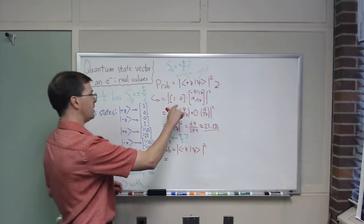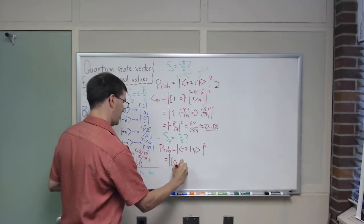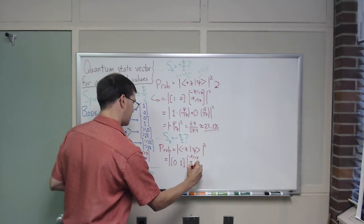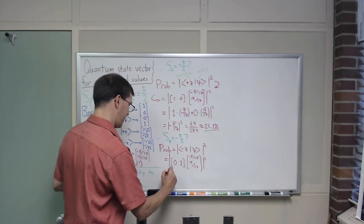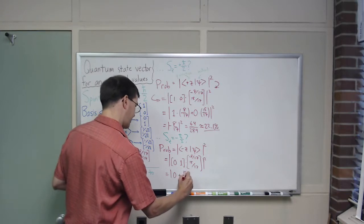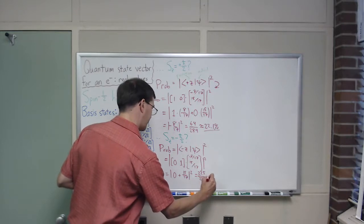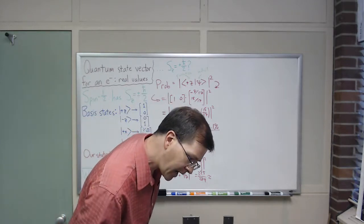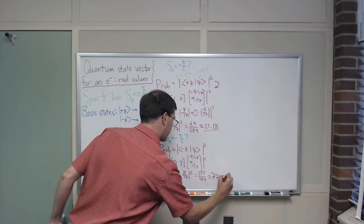This is going to give me, let's see, I can just do it, so it's 0, 1, times minus 8, 17, 15, 17, you can, I'm spelling this all out in gory detail, but you can probably see where this is going, right? It's going to be 0 plus 15, 17, absolute square, which is going to be 225 over 289, and if you work that out, again, you can plug it into a calculator, I did that earlier, and indeed, it gave me 77.9%, check, it had to be the same.